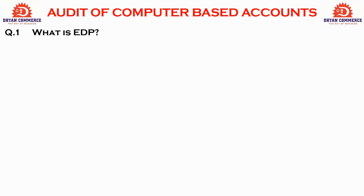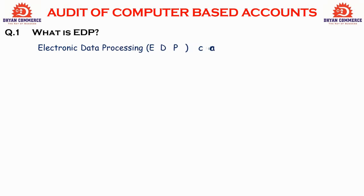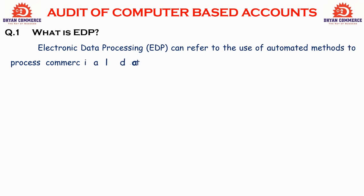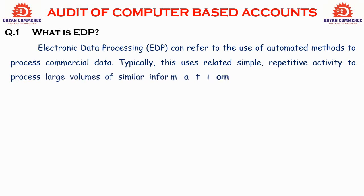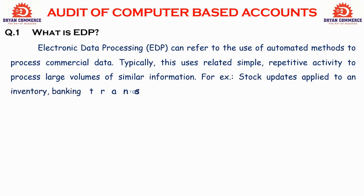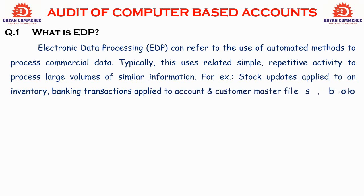EDP stands for Electronic Data Processing. You can learn some extra points for the exam. In the previous paper it was 1-2 marks. EDP can refer to the use of an automatic method to process commercial data. Typically, it involves simple, repeatedly performed activities to process large volumes of similar information — for example, stock updates applied to an inventory, banking transactions applied to accounts, and customer master files and bookings.